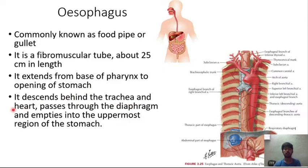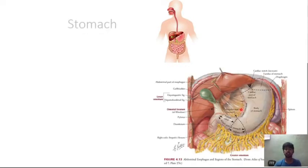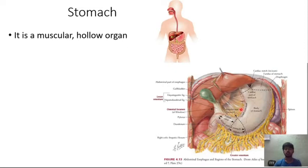The esophagus descends behind the trachea and heart, passes through the diaphragm, and empties into the uppermost region of the stomach. It has two muscular rings, otherwise known as sphincters — one at the top and one at the bottom.